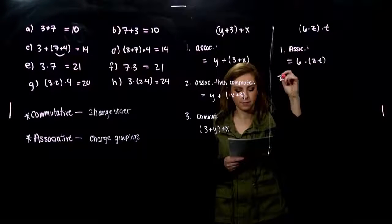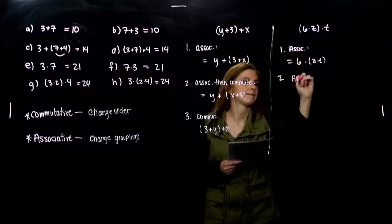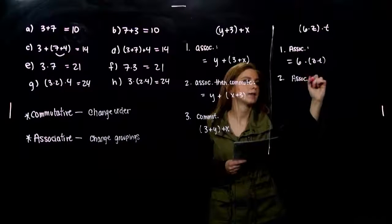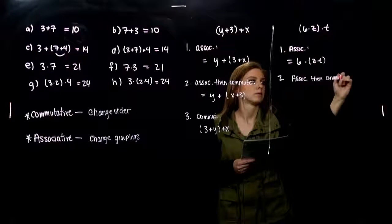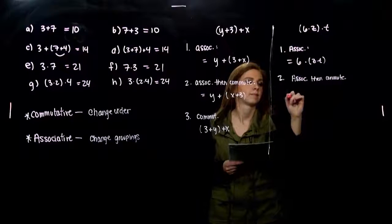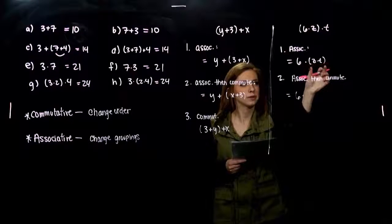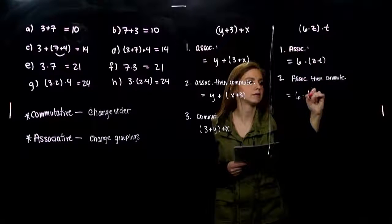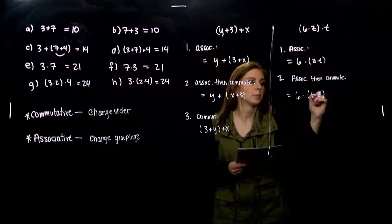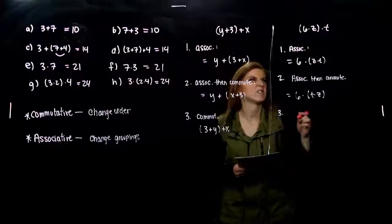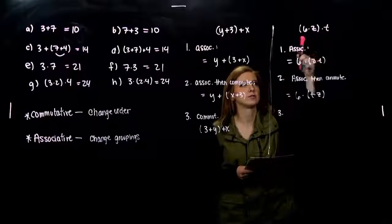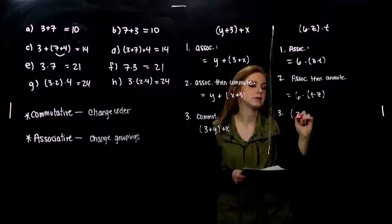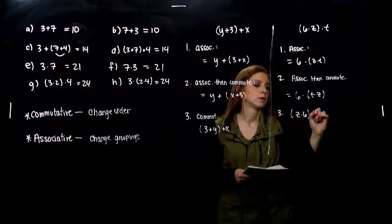Or I could first associate it, like we have, and then commute. So I've already regrouped together. Now I'm going to change the order on the inside of the grouping. It all means the same. Or what else could I have done in the very beginning? I could keep the grouping the same, but change the order of the inside of the multiplication.